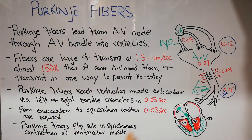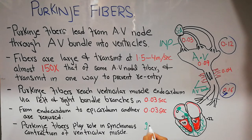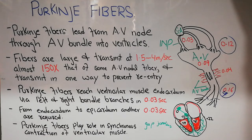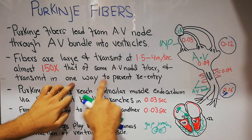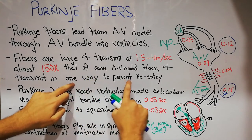The Purkinje fibers are present in the atrioventricular bundle. The fibers are larger in size and have more gap junctions. These gap junctions allow rapid transmission of electrolytes like sodium, potassium, and calcium, which leads to rapid conduction speed. Their large size also allows for rapid speed. Additionally, they transmit the signal in only one way, to prevent re-entry.